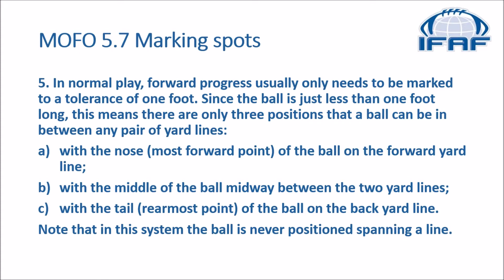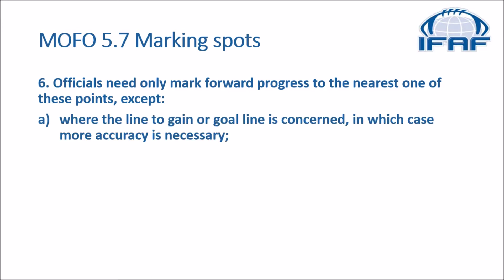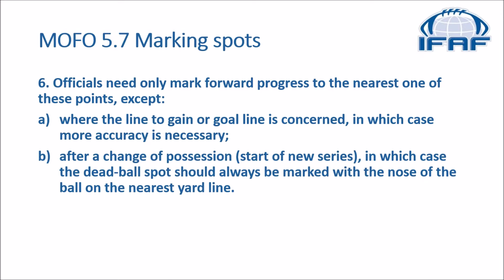Note that in this system, the ball is never positioned spanning a line. Officials need only mark forward progress to the nearest one of these points, except: A when the line to gain or goal line is concerned, in which case more accuracy is necessary; and B after change of possession or start of a new series, in which case the dead ball spot should always be marked with the nose of the ball on the nearest yard mark.